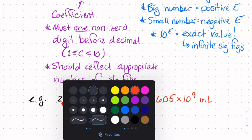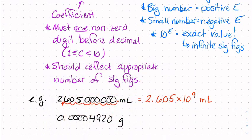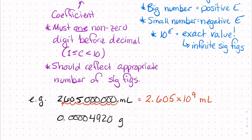If we have a small number, let's say it's 0.00004920. If we want to convert this into scientific notation, we are looking again to get one non-zero digit before our decimal point. We want it to end up between the 4 and the 9. It is currently over here between these 0s.